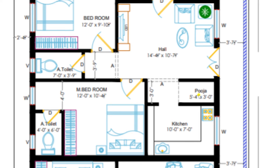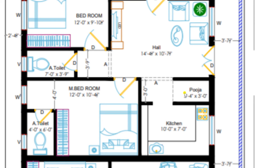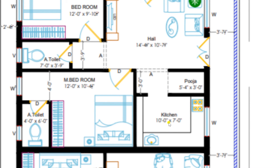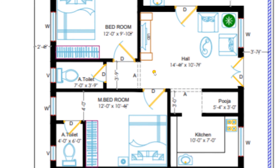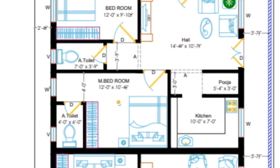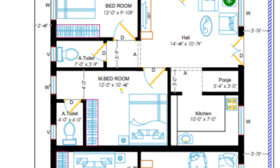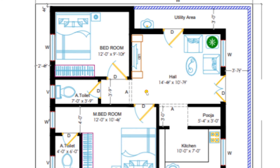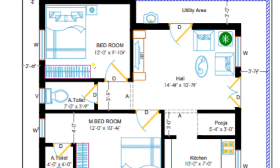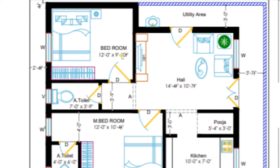Through the hall I am entering through the arch to the Pujagadi of size 5 feet 4 inches by 3 feet. From the Pujagadi I am entering to the kitchen of dimension 10 feet by 7 feet — a very comfortable area. Now entering to the master bedroom of this portion of dimension 12 feet by 10 feet 4.5 inches, which is attached with a toilet of 4 feet by 6 feet. And entering to one more bedroom of dimension 12 feet by 9 feet 10.5 inches, which is also attached with a toilet of 7 feet by 3 feet 9 inches.